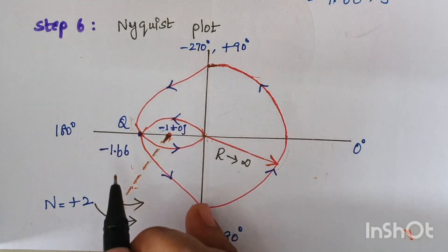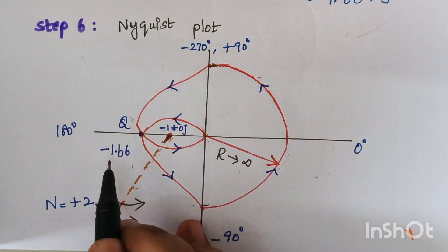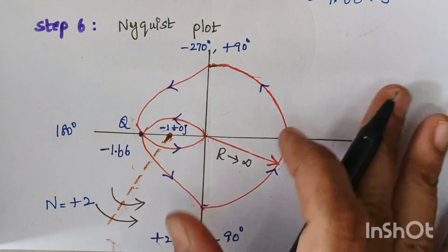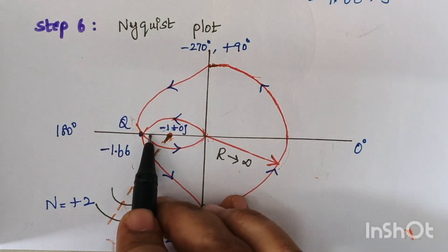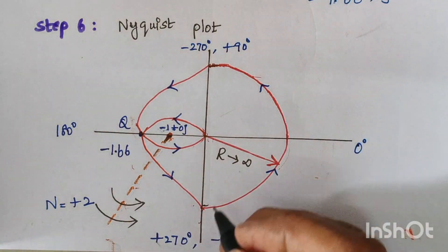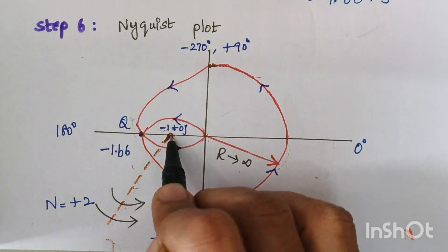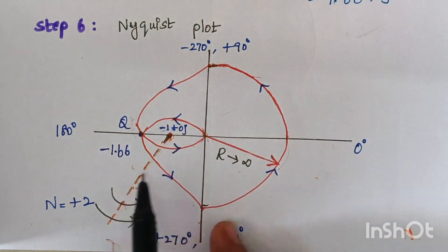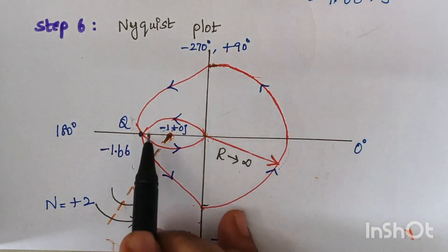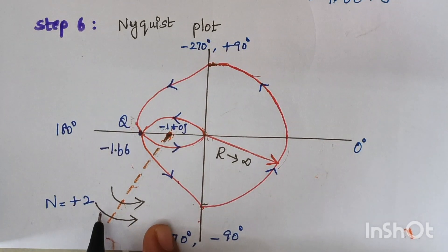Since the intersection is at minus 1.66, the point minus 1 lies inside the Nyquist plot. To calculate the number of encirclements: place a dot at minus 1 and draw a line outward. Count how many times the Nyquist plot crosses that line. We find two lines crossing in the anticlockwise direction, giving N equals plus 2.